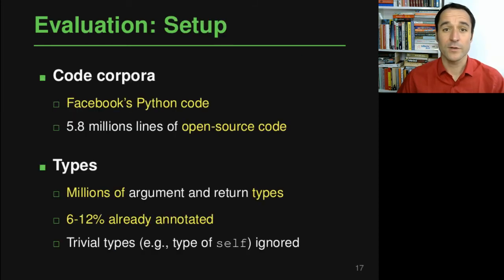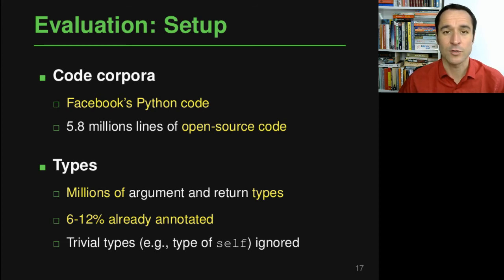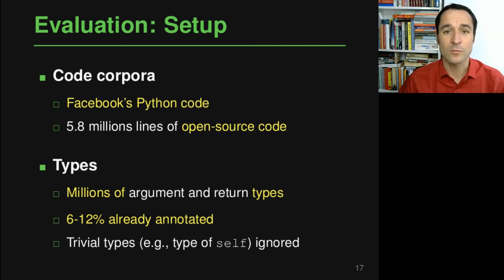TypeWriter is evaluated on two code corpora: all Python code at Facebook (many millions of lines) and an open-source corpus of almost six million lines. There are millions of locations where type annotations could be added, focusing on argument types and return types of functions. Between 6 and 12 percent of those are already annotated, which is used to train the neural model.